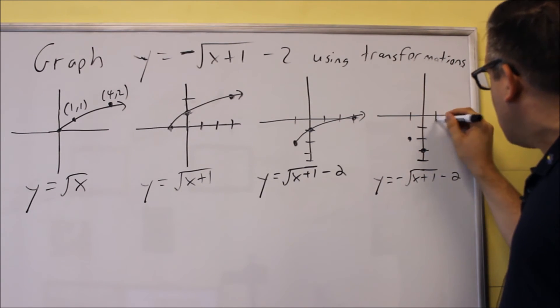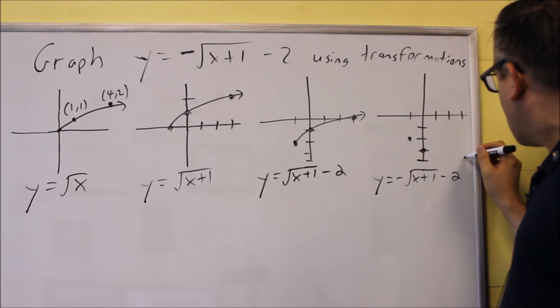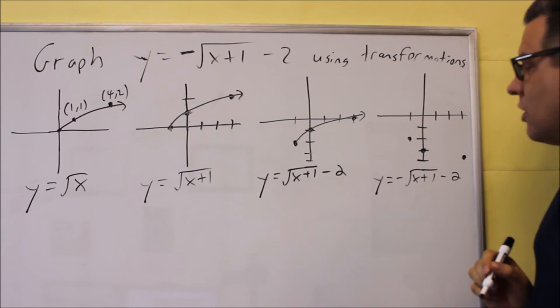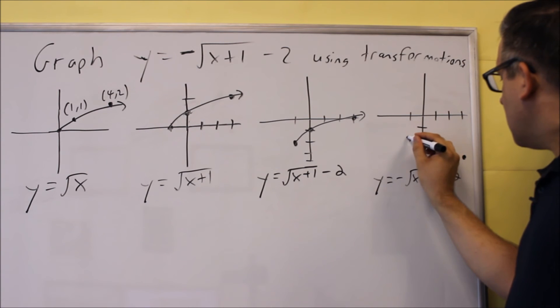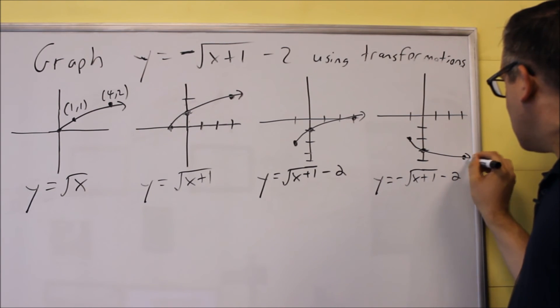So that means that this one's going to be at this point. It's going to go through 3 and negative 4, which means the graph is going to now look like that.